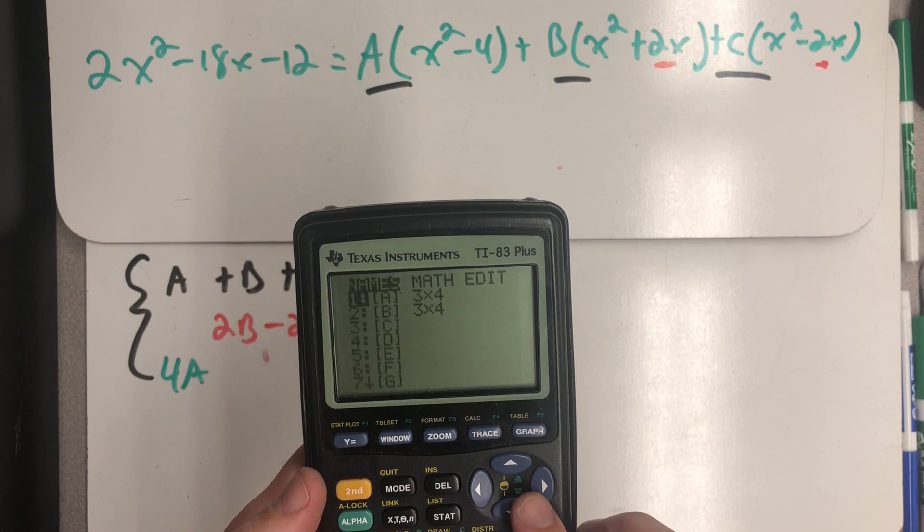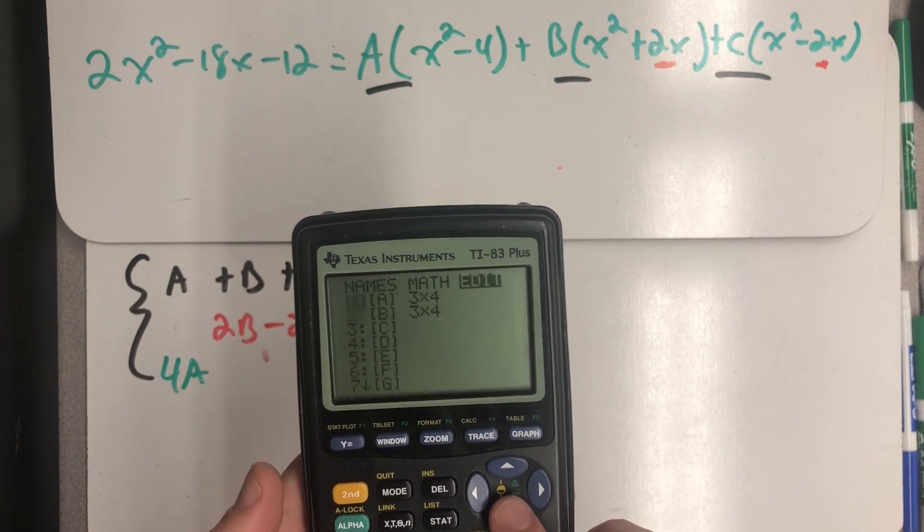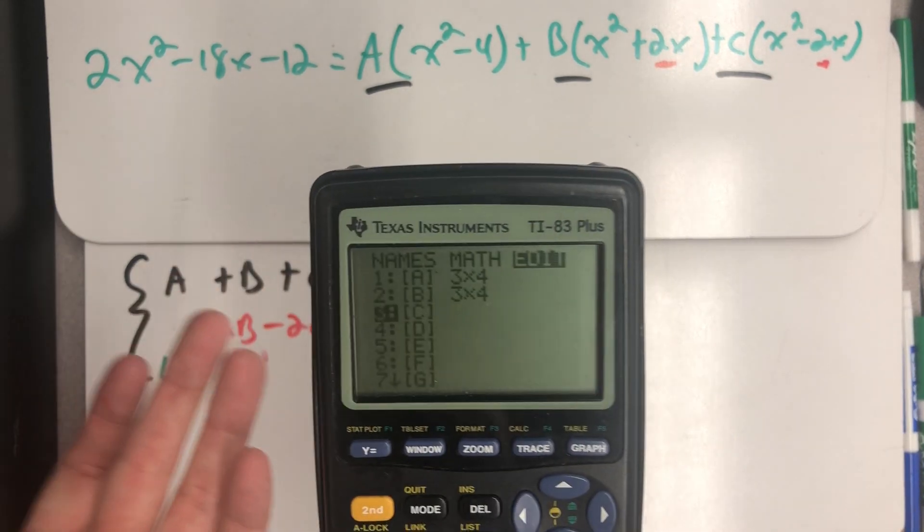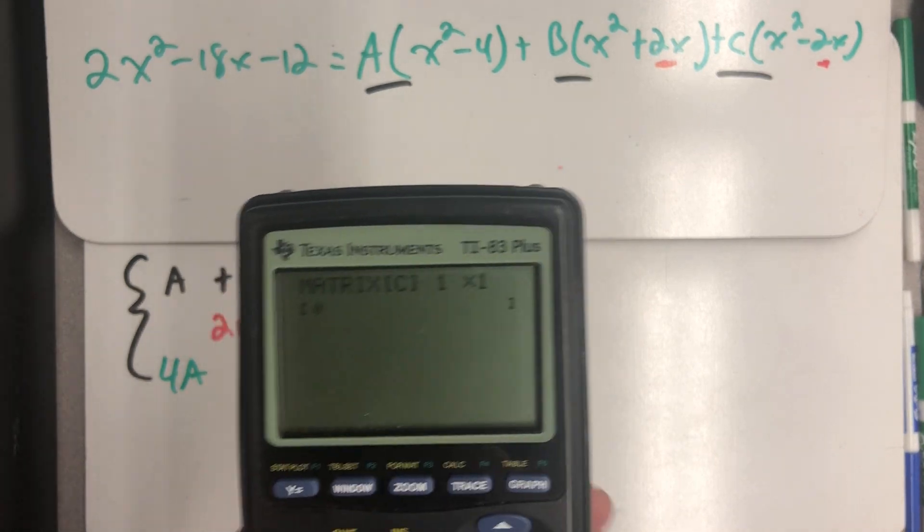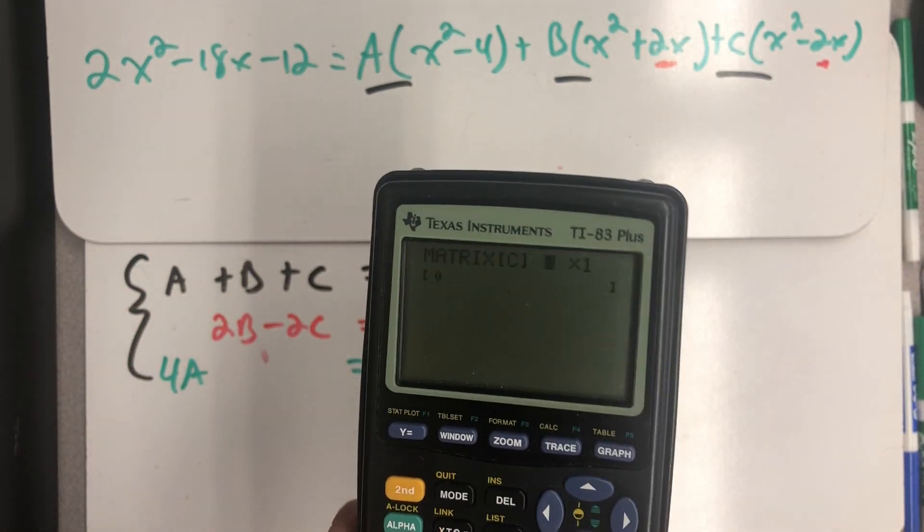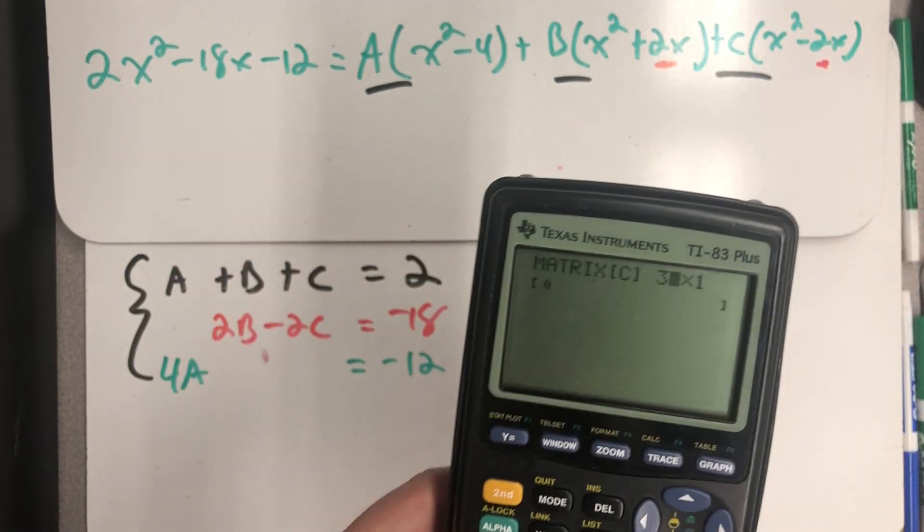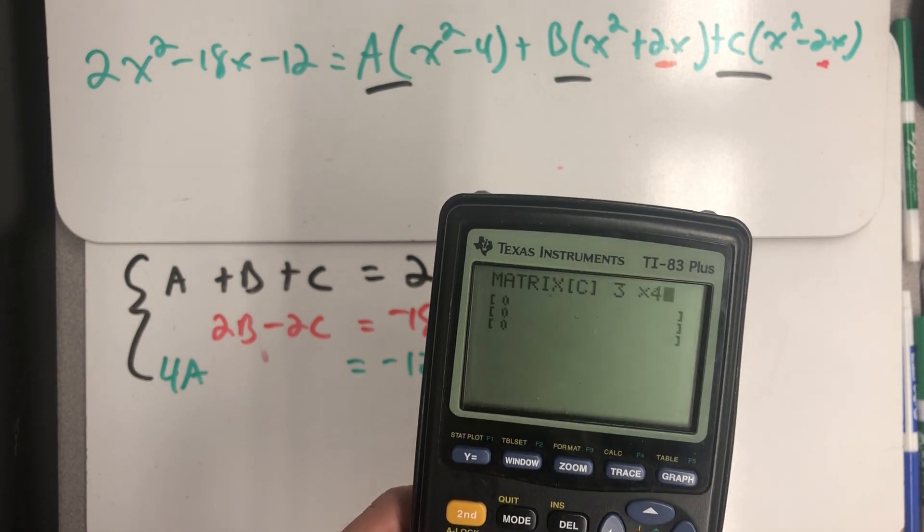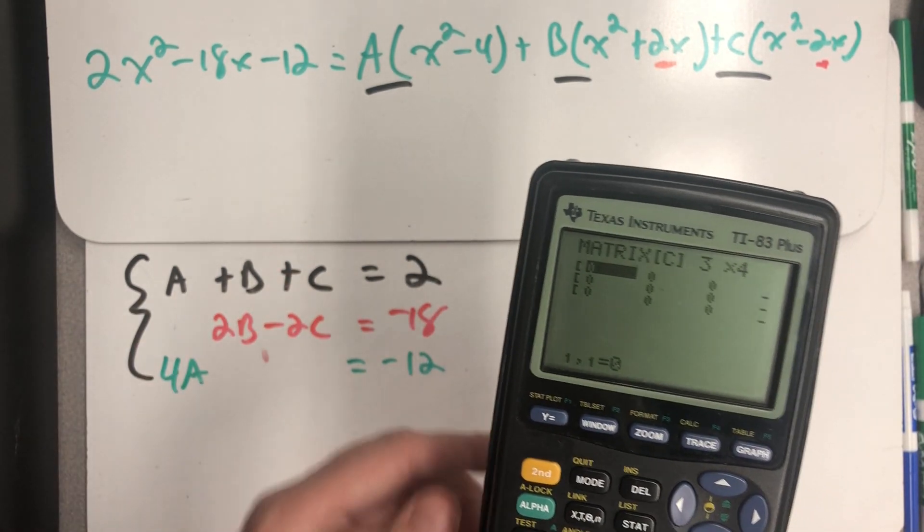So I'm going to hit second matrix. I'm going to go over to edit and I'm going to use matrix C because why not? One, two, three rows. One, two, three, four columns. And now I just need to enter in those coefficients.